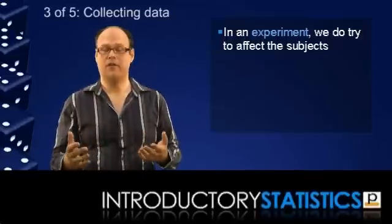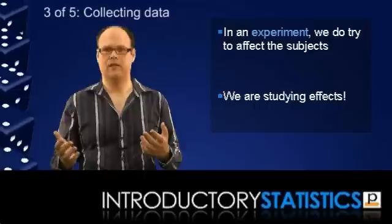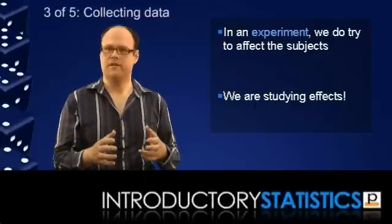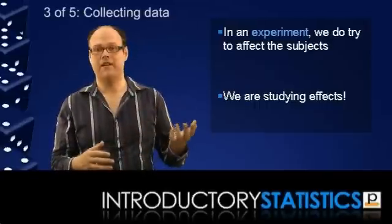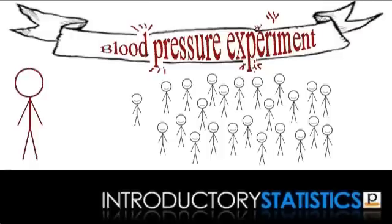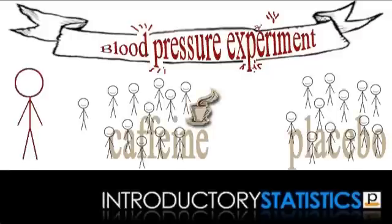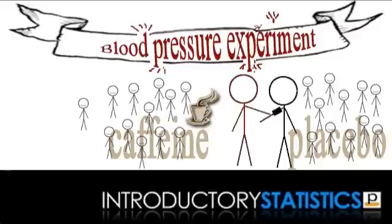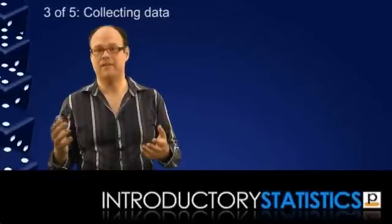But in an experiment, you are trying to affect the subjects of the study because you're trying to test the effect of one variable on another. So you do provide controlled treatments to the subjects. So if you were testing the effect of caffeine on blood pressure, then what you might do is go out and collect 100 people, but this time split them into two groups of 50. Provide a dose of caffeine to the first group and a placebo to the second. And then measure the blood pressure in everyone and see if there's any difference between the two groups. If there is a difference, you might conclude that caffeine does affect blood pressure.